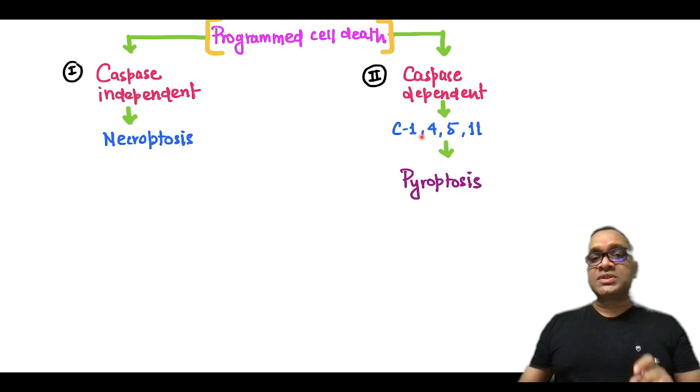How it differs from apoptosis? Because the caspases are different. And what are the caspases? 1, 4, 5, and 11. So these are the new updates in Robbins. 4 and 5 have been added. Previous Robbins was telling 1 and 11. So overall, if you remember, if you read the articles or journals or another standard textbook, you will find that all these four are important caspases which are associated with pyroptosis.